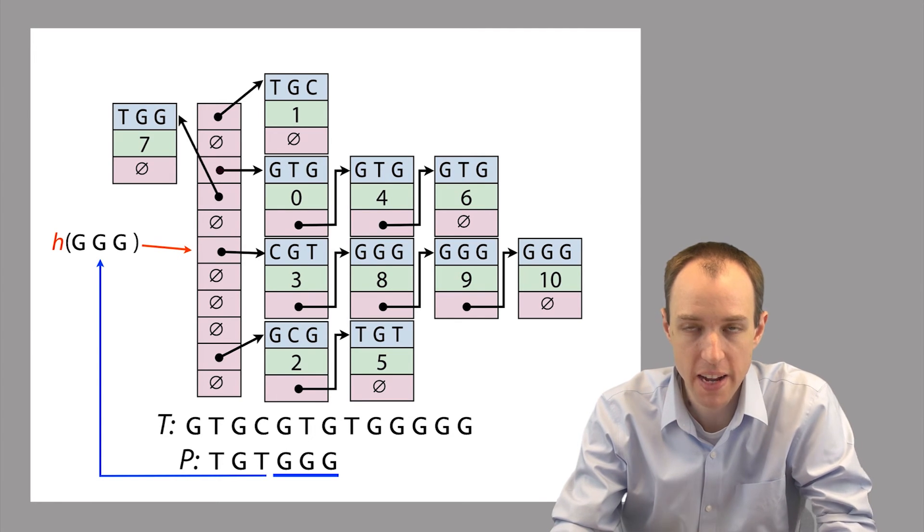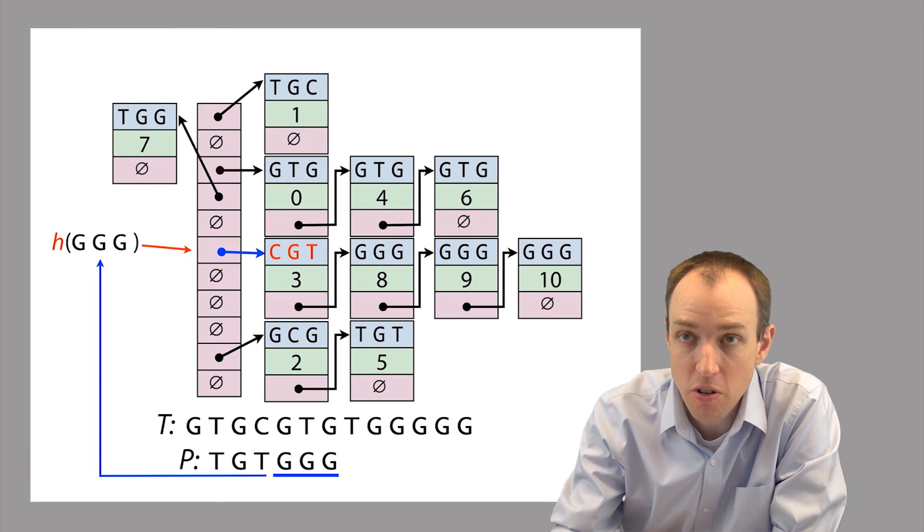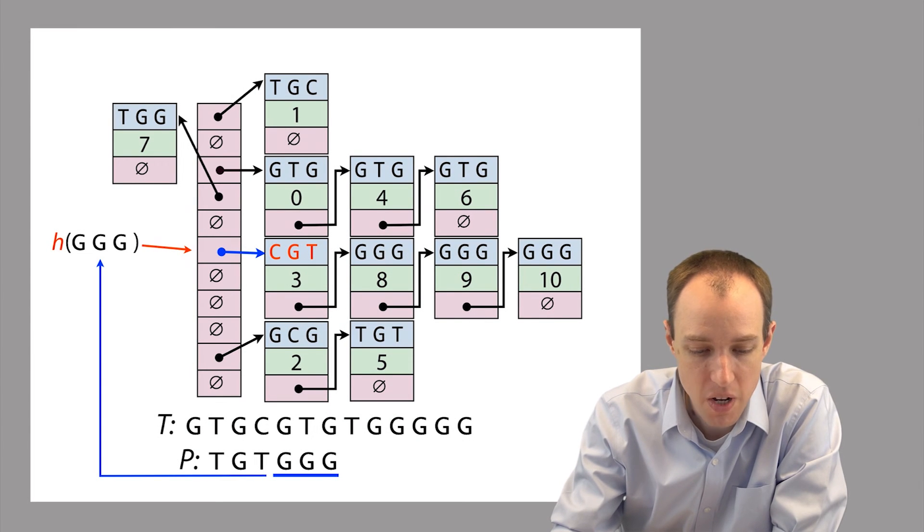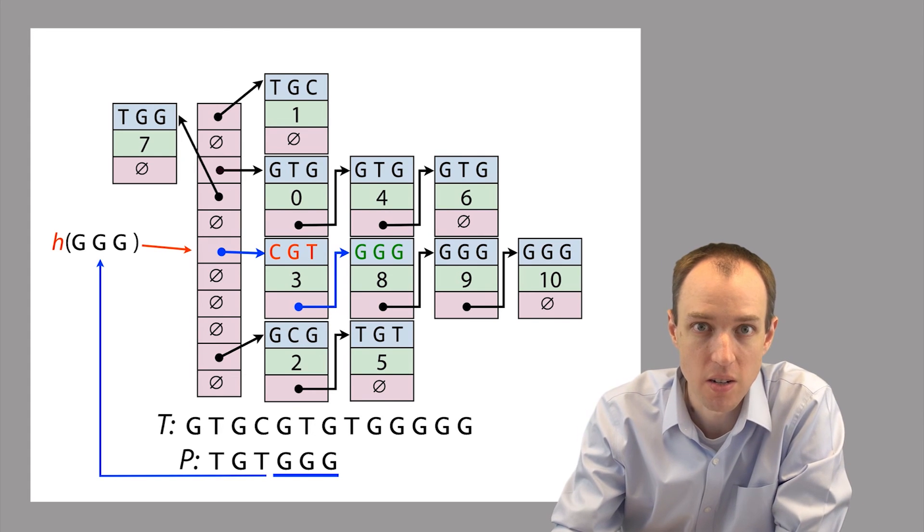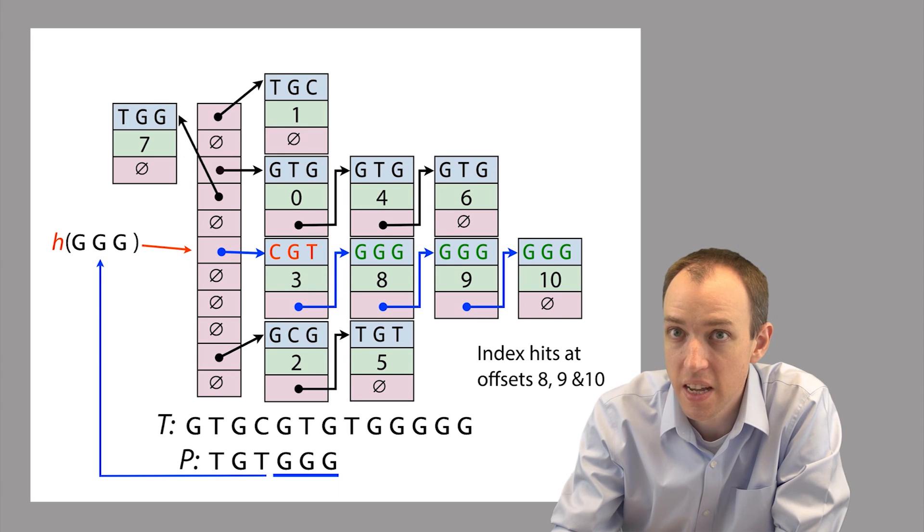So the first thing we do is we use our hash function to map triple G onto a bucket. We get this bucket here. We know that this is the one and only bucket that we have to look in. Because this is the bucket that the hash function assigns triple G to. In other words, we know we're in the right aisle of the grocery store now. We just have to go looking down the aisle. So we look at the first entry in the list. And we look at the key at the 3mer. And we notice that this key is not equal to the 3mer that we're querying with. It's not equal to triple G. So we ignore it and move on. And then for the next three entries in the list, we notice that the key does match our query 3mer. In all three cases, it's triple G. So in each case, we know that the corresponding offset in that key value pair is one of the ones that the index is going to report back as being an offset within T where triple G occurs. So at the end of the day, we get offsets 8, 9, and 10.